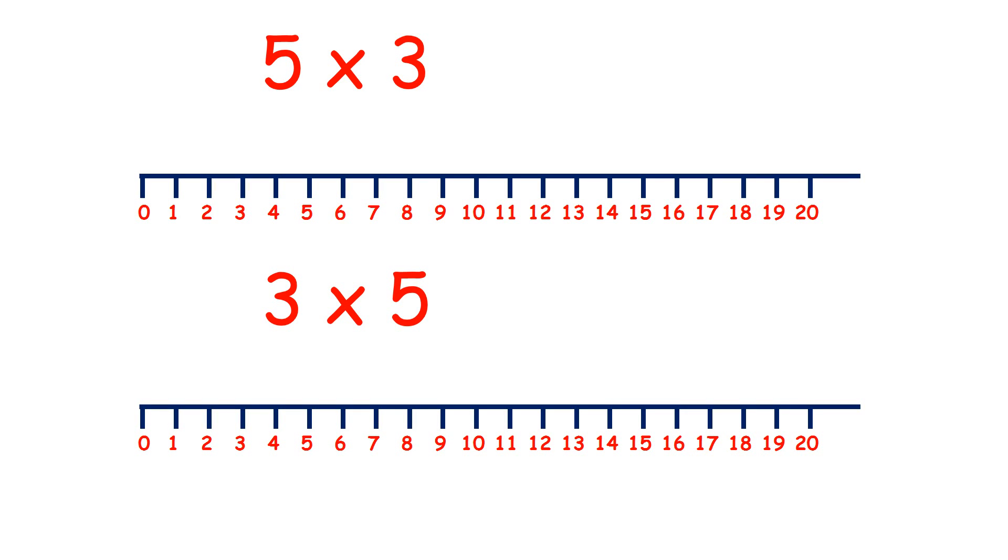So we can multiply on a number line. If we have 5 times 3, we can count in steps of 3, 5 times.